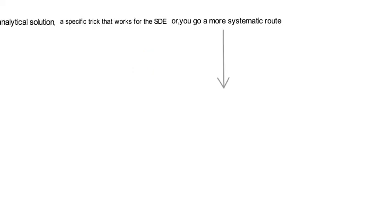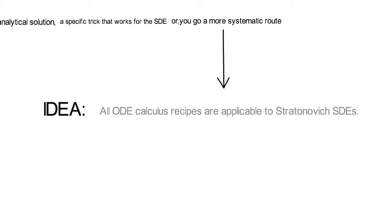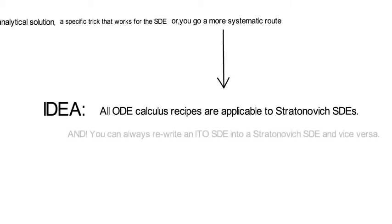Now the systematic route has the advantage that you don't have to memorize tricks. Instead you only need to memorize one idea. Namely all ODE calculus recipes that got developed over the past hundreds of years are applicable to Stratonovich SDEs. I highlight Stratonovich. And importantly, you can always rewrite an ITO SDE into a Stratonovich SDE and vice versa.